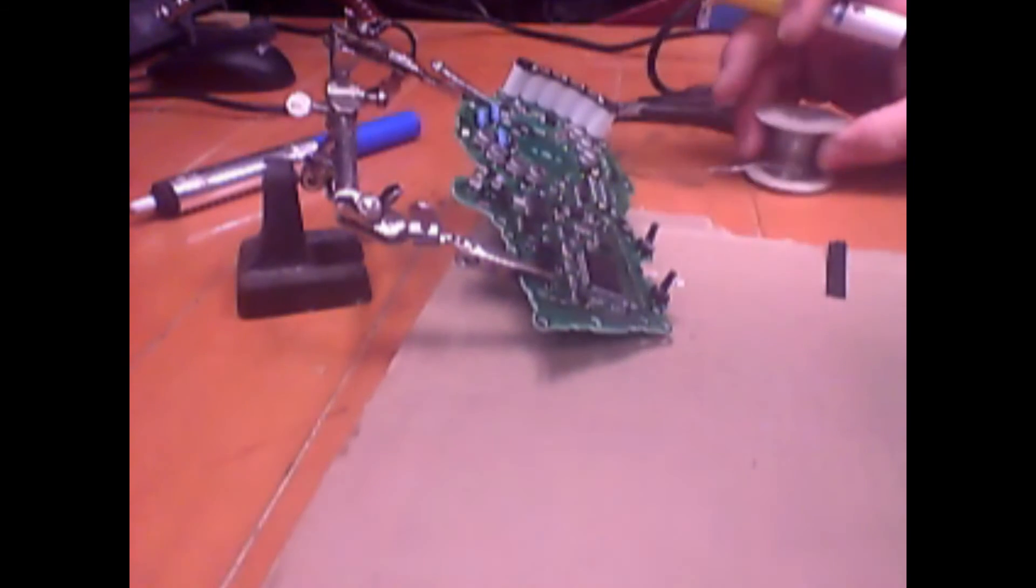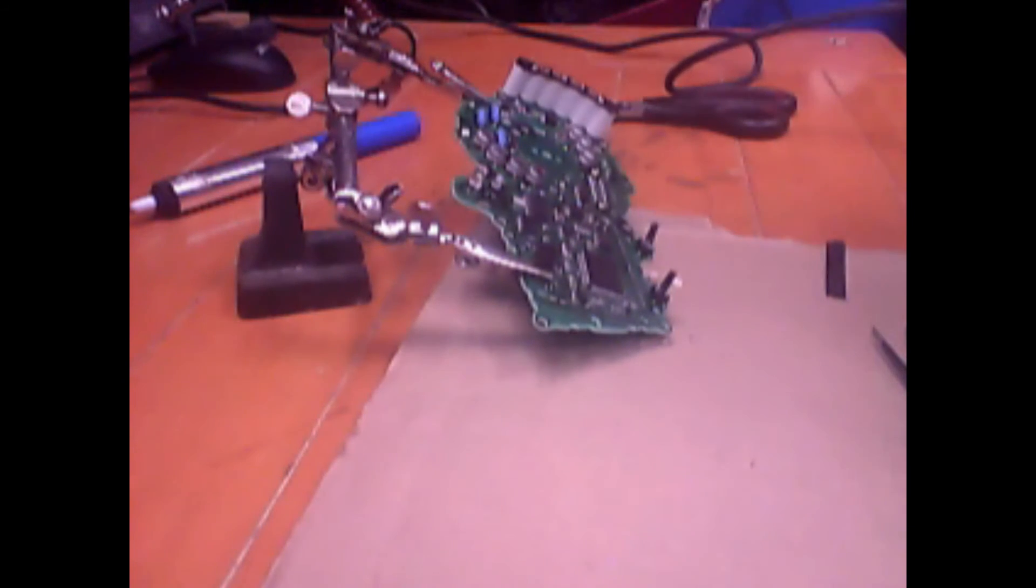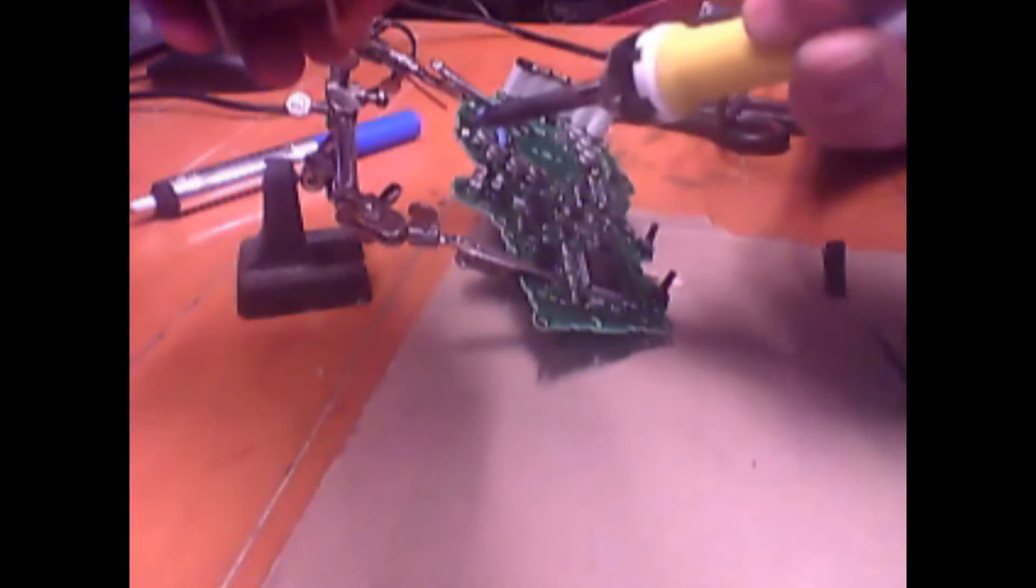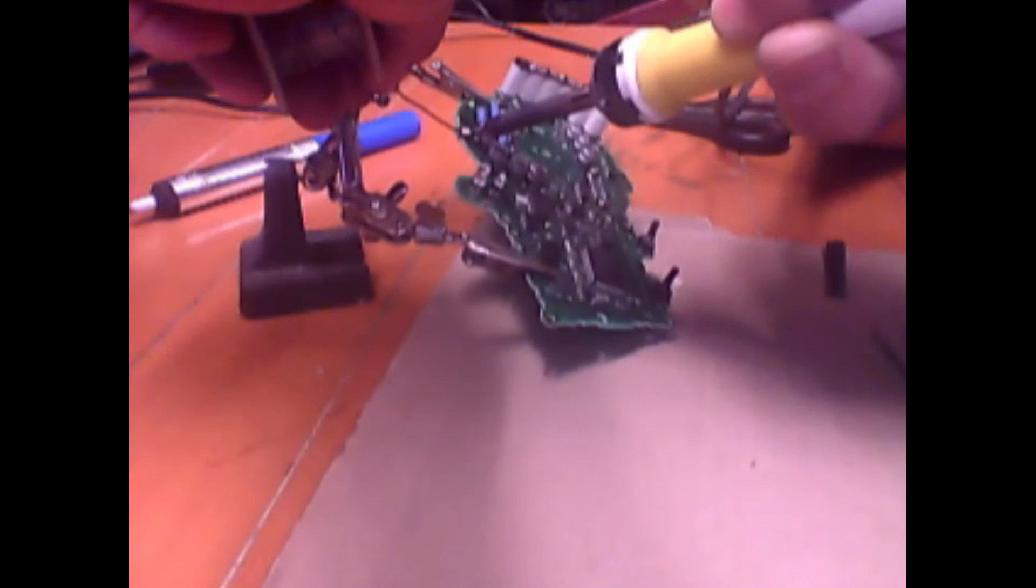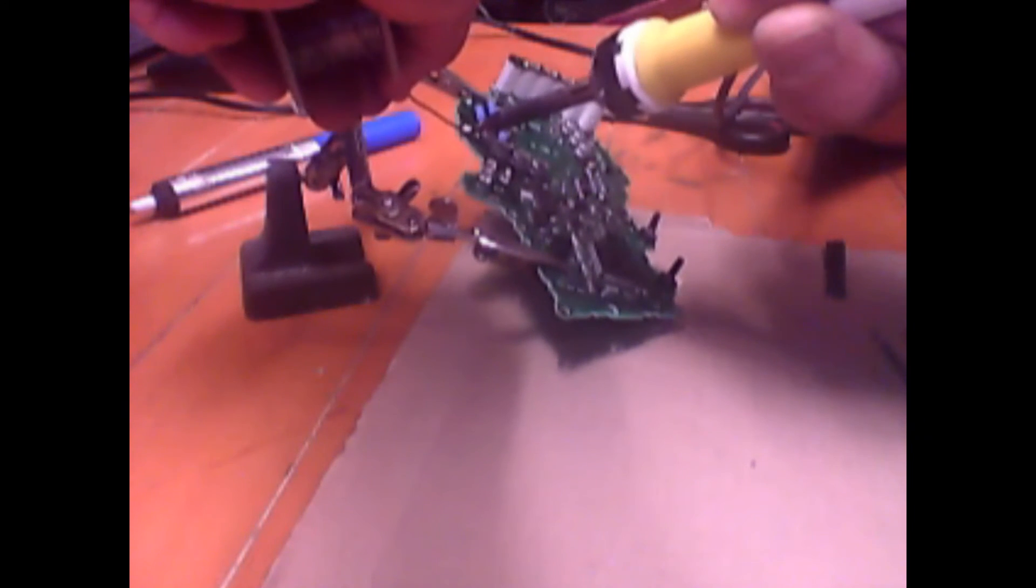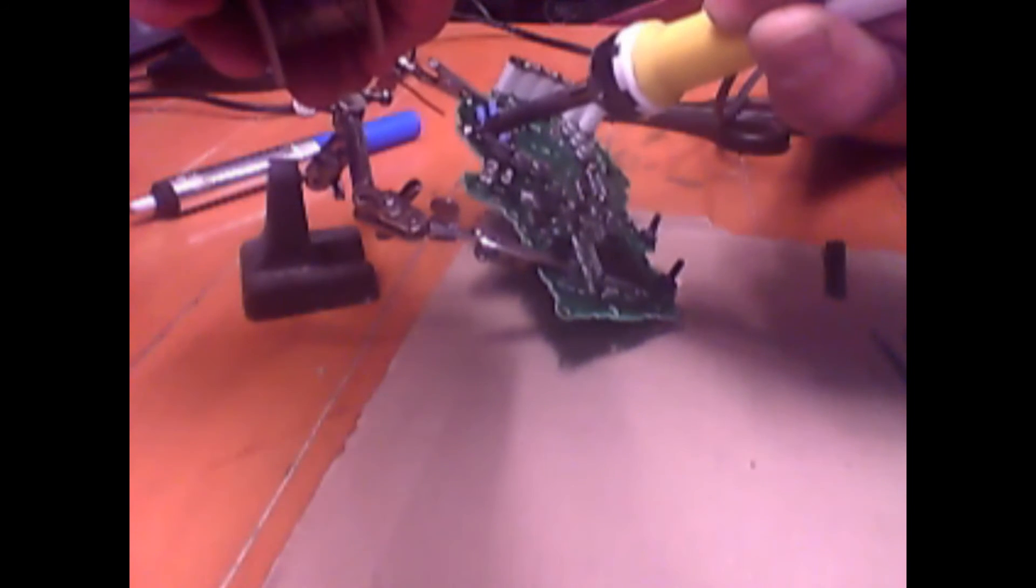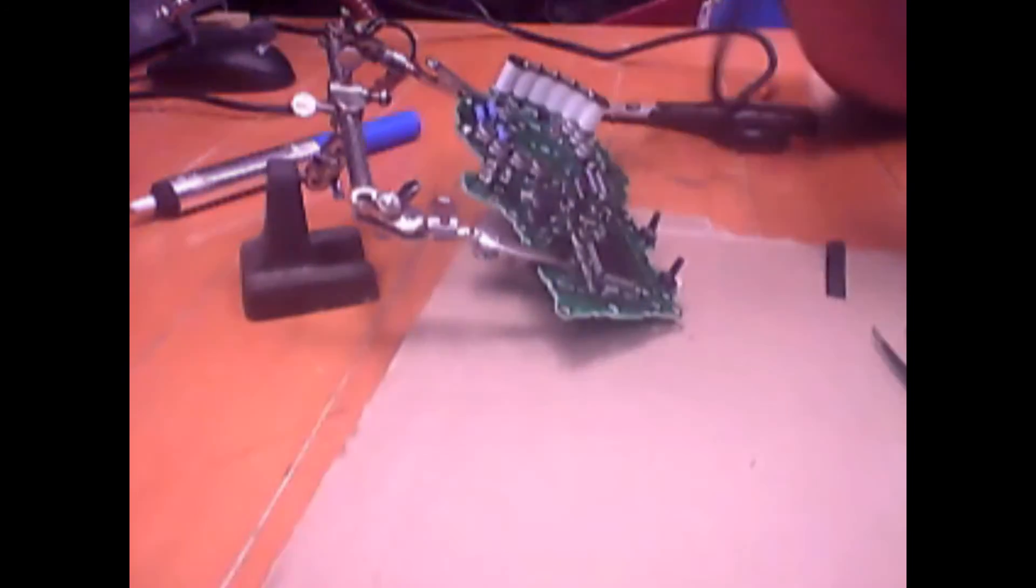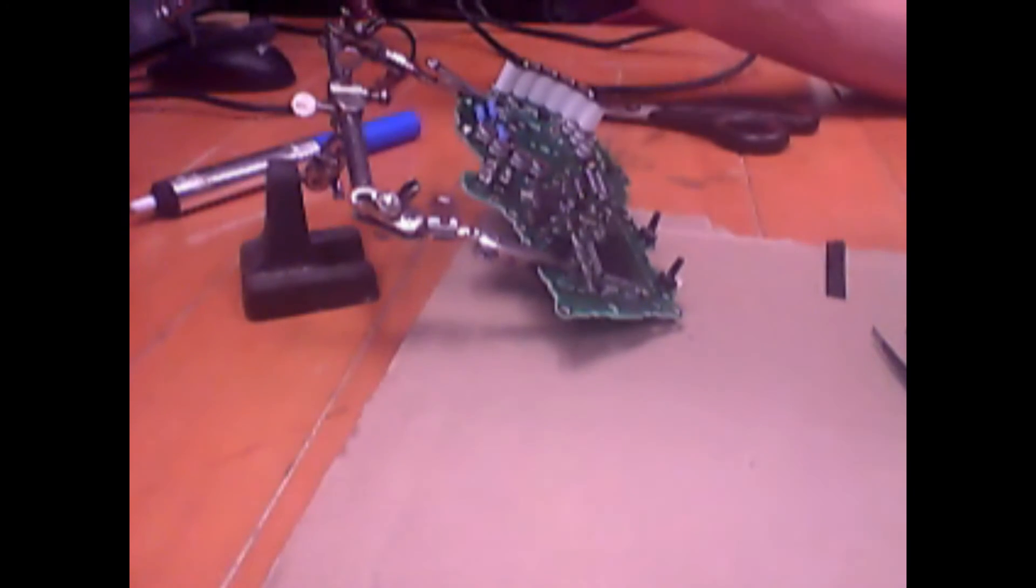And once you've done that, you can let go with the tweezers because the single solder point will hold it. Hit the contact point and apply the solder until the solder melts and bridges the gap between the two. And that is essentially all you need to do.